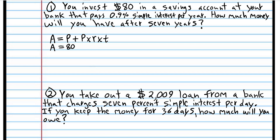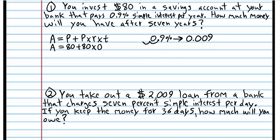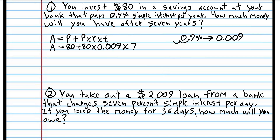The principal is $80 in this example. We have to change the percent to a decimal. If you forgot how to change the percent to a decimal, you always take the decimal and move it two places to the left, which means you have to add a placeholder zero. So we have an extra placeholder zero here — this zero is just written so the decimal doesn't look like a speck of dirt. So R is 0.009, and then we multiply by 7 years.